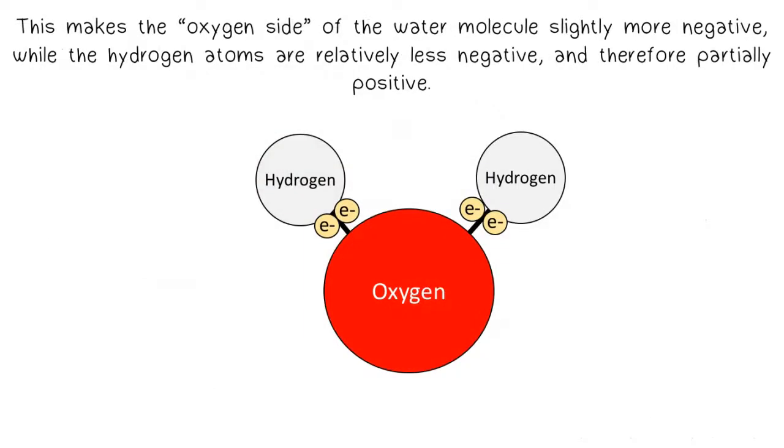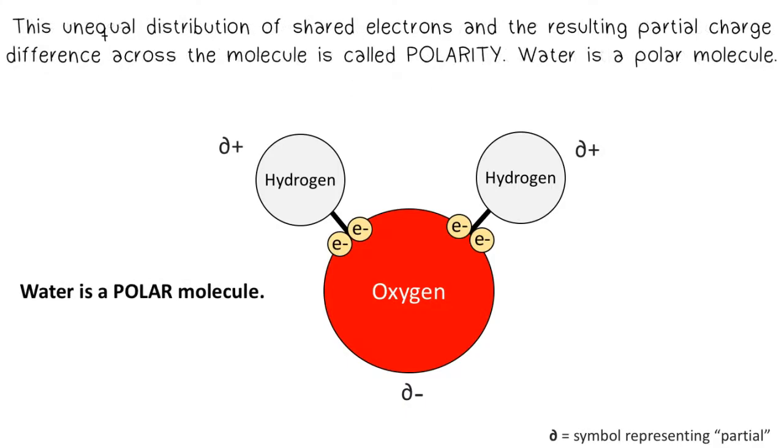This makes the oxygen side of the water molecule slightly more negative, while the hydrogen atoms are relatively less negative, and therefore partially positive. This unequal distribution of shared electrons and the resulting partial charge difference across the molecule is called polarity.